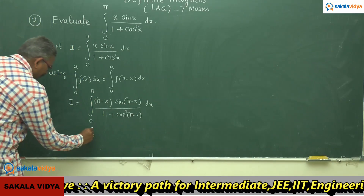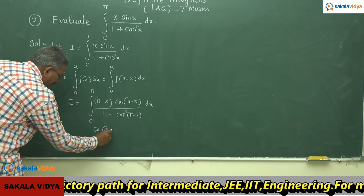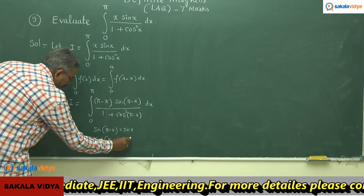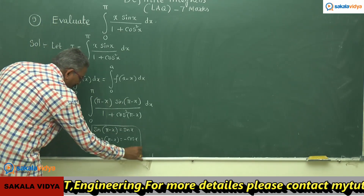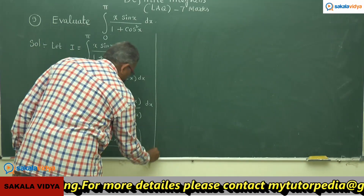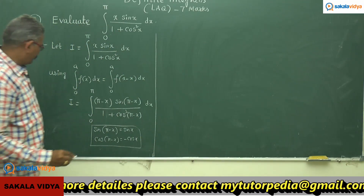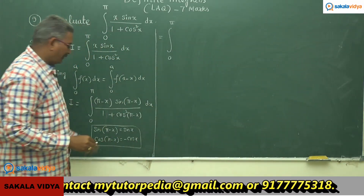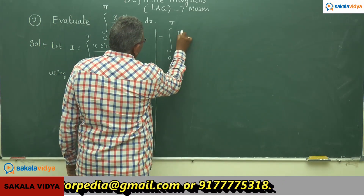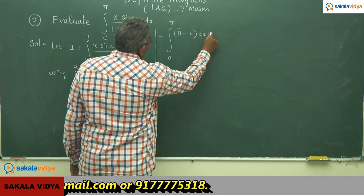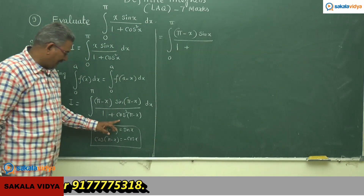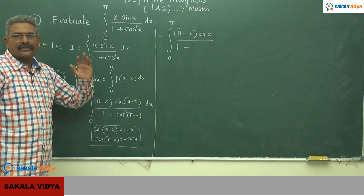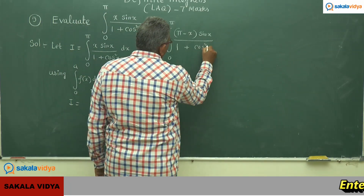Here, sin(π - x) is sin(x), whereas cos(π - x) is minus cos(x). This is a very interesting thing — though cos(π - x) is minus cos(x), we have (−cos x)² = cos²x. So the denominator becomes 1 + cos²x dx.